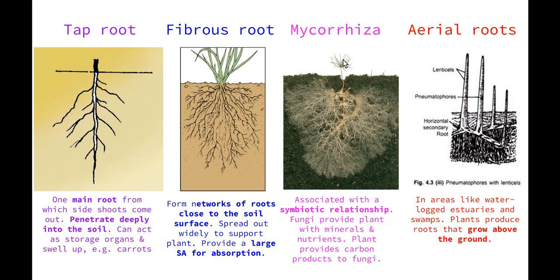Lastly, aerial roots, which we had a look at on the excursion, the pneumatophores of mangroves, which are found in areas like waterlogged estuaries and swamps. That area we went to on the excursion is known as an estuary, where we have a constant tidal movement of saltwater and freshwater in and out of a low-lying area and the soil becomes quite waterlogged. To overcome that, the plants produce roots that grow above the ground to carry out gas exchange so they don't become too waterlogged.